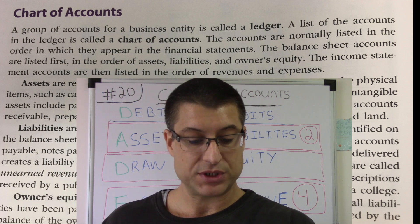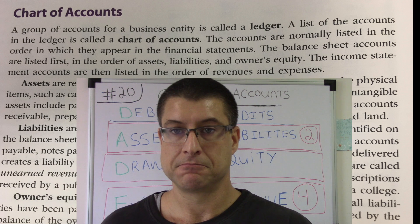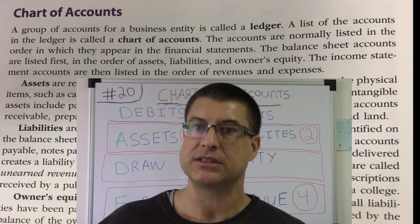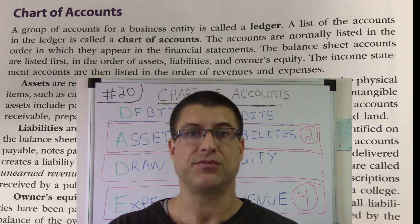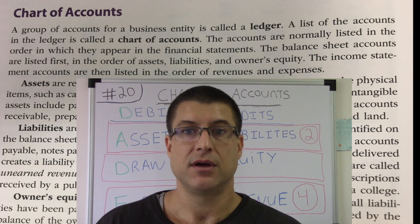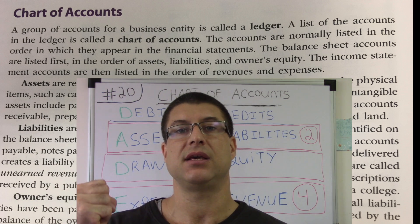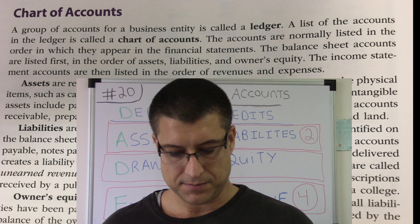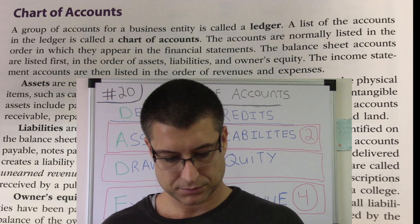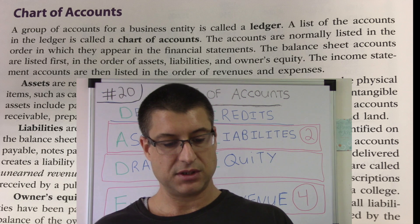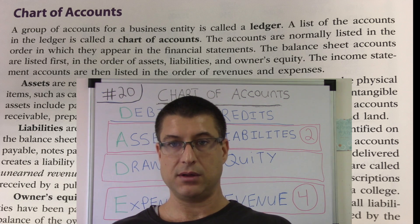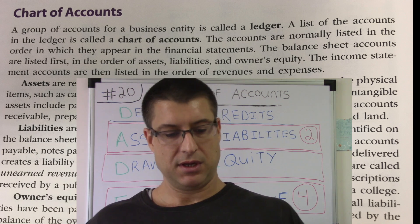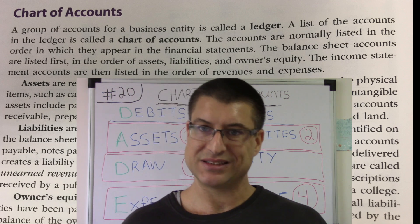The accounts are normally listed in the order in which they appear in the financial statements. The balance sheet is the big dog, because it goes from year to year. The income statement is underneath, and that's just for a certain period of time. That's how the chart of accounts are listed. The balance sheet accounts are listed first in the order of assets, liabilities, and owner's equity — that is the accounting equation: assets equal liabilities plus equity.